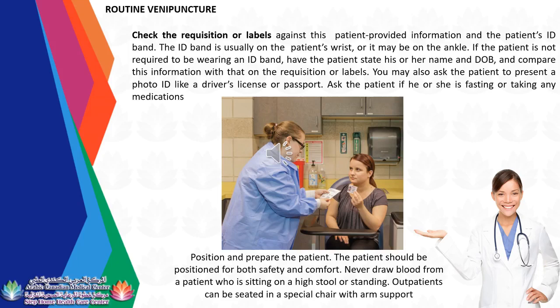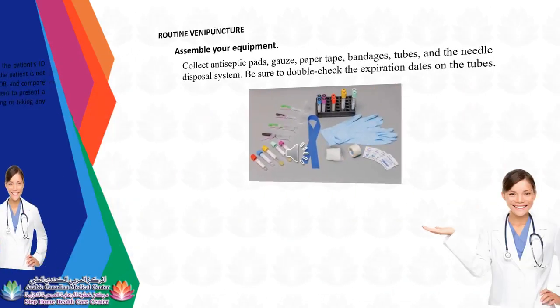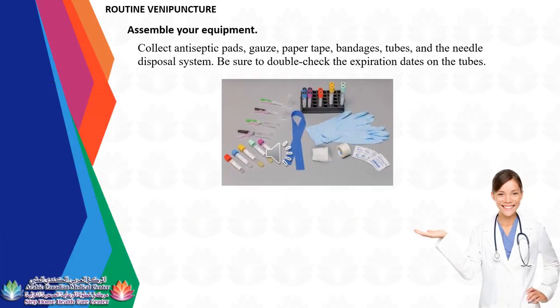Position and prepare the patient. The patient should be positioned for both safety and comfort. Never draw blood from a patient who is sitting on a high stool or standing. Outpatients can be seated in a special chair with arm support. Assemble equipment: collect antiseptic pads, gauze, paper tape, bandages, tubes, and the needle disposal system. Be sure to double-check the expiration dates on the tubes.